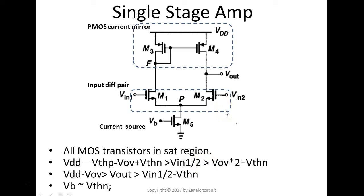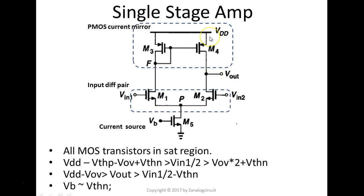Now for the other direction: if we raise Vin1 and Vin2, at a certain point M1 will leave the saturation region. Node F is one Vgs down from VDD, which is one overdrive. Going back up to Vin, that is one overdrive plus one PMOS threshold. The maximum voltage Vin can go up to is VDD minus one PMOS threshold minus one overdrive plus one NMOS threshold.